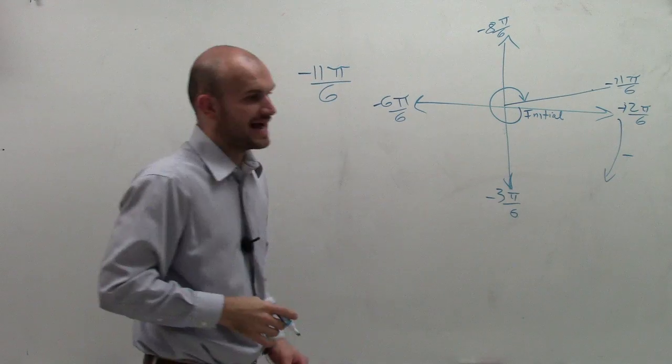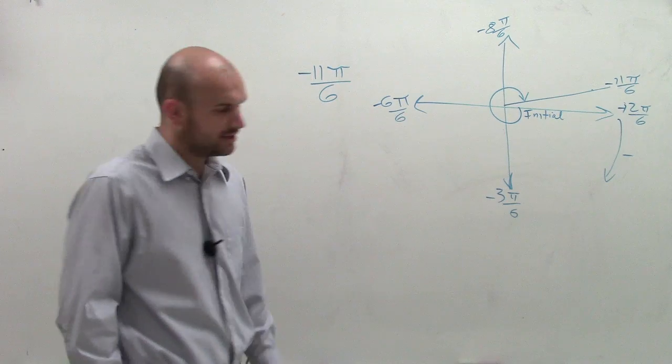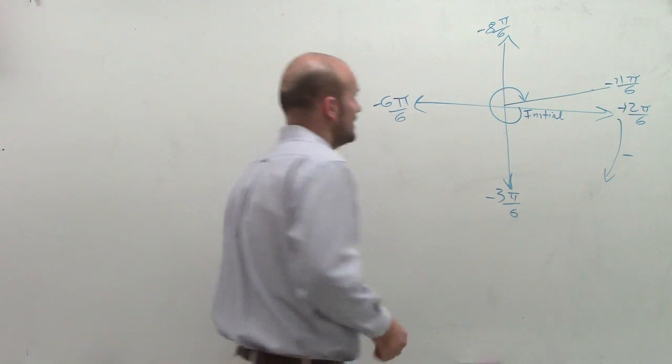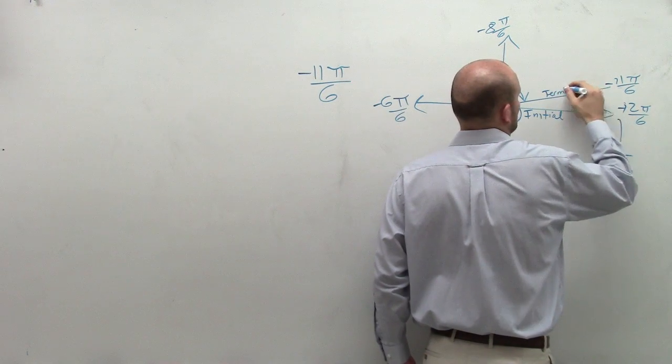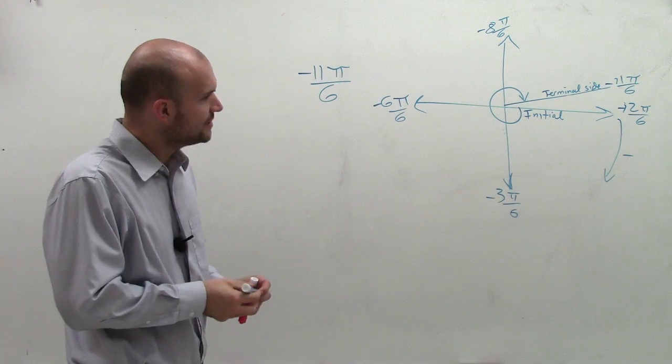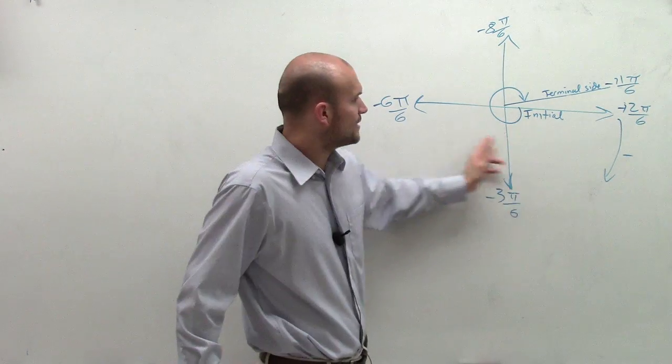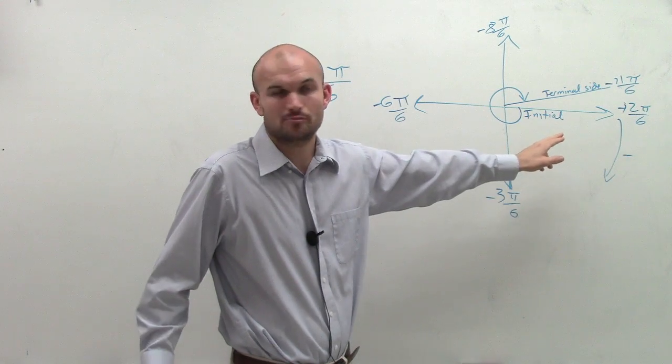So what I want to do is I need to find out my two coterminal angles. So remember, coterminal angles are going to be angles that have the exact same initial and terminal side. So if you look at it, remember, all the way around a circle is 2 pi, right?